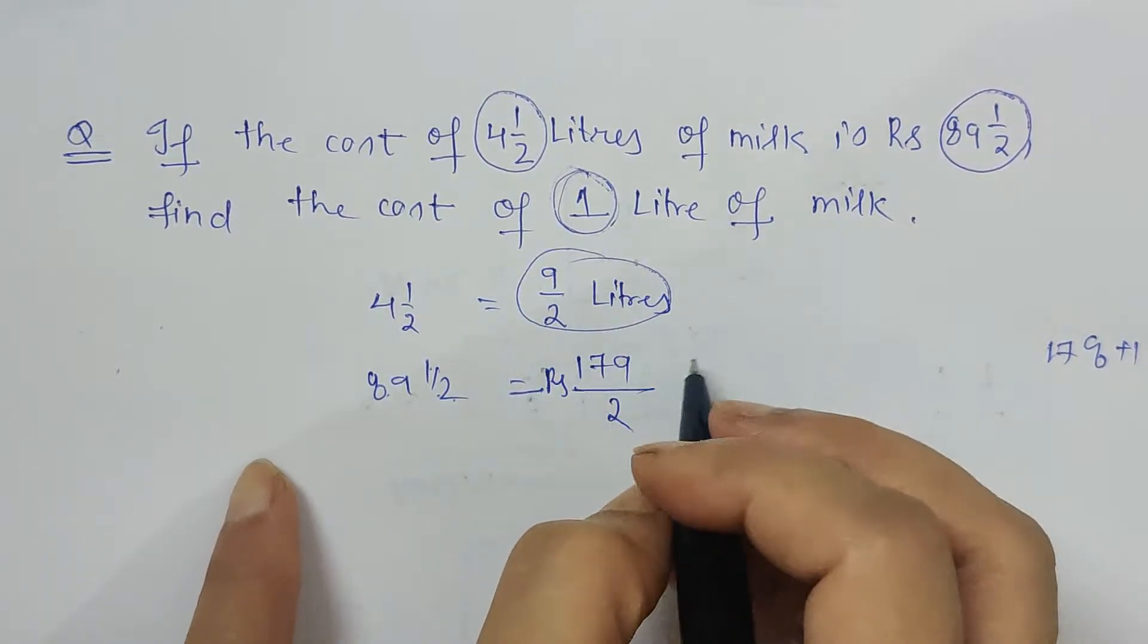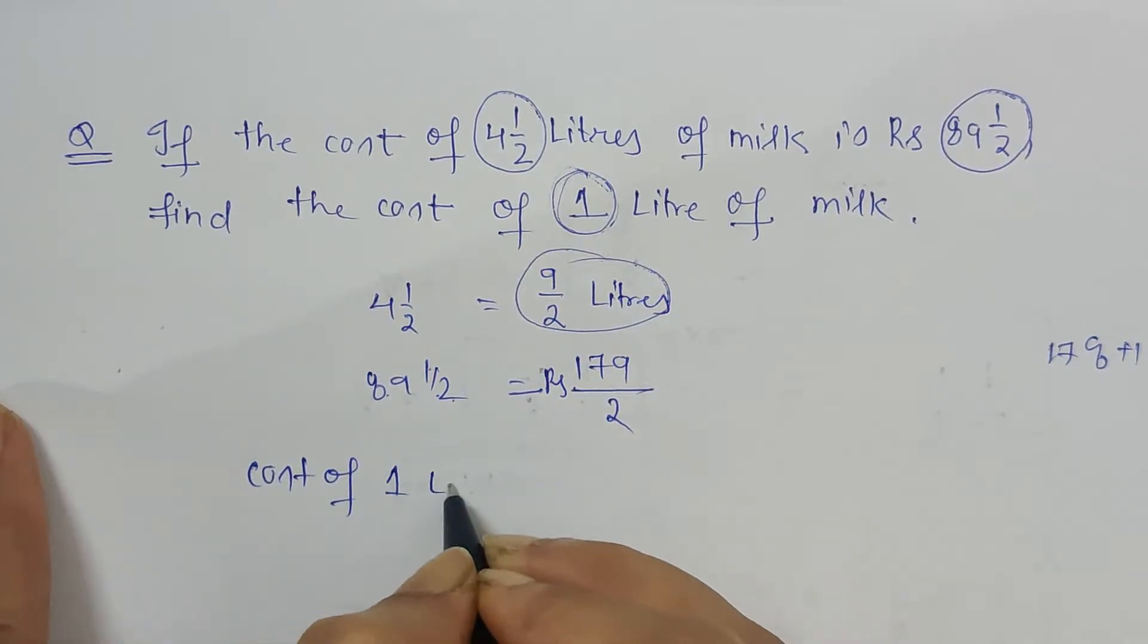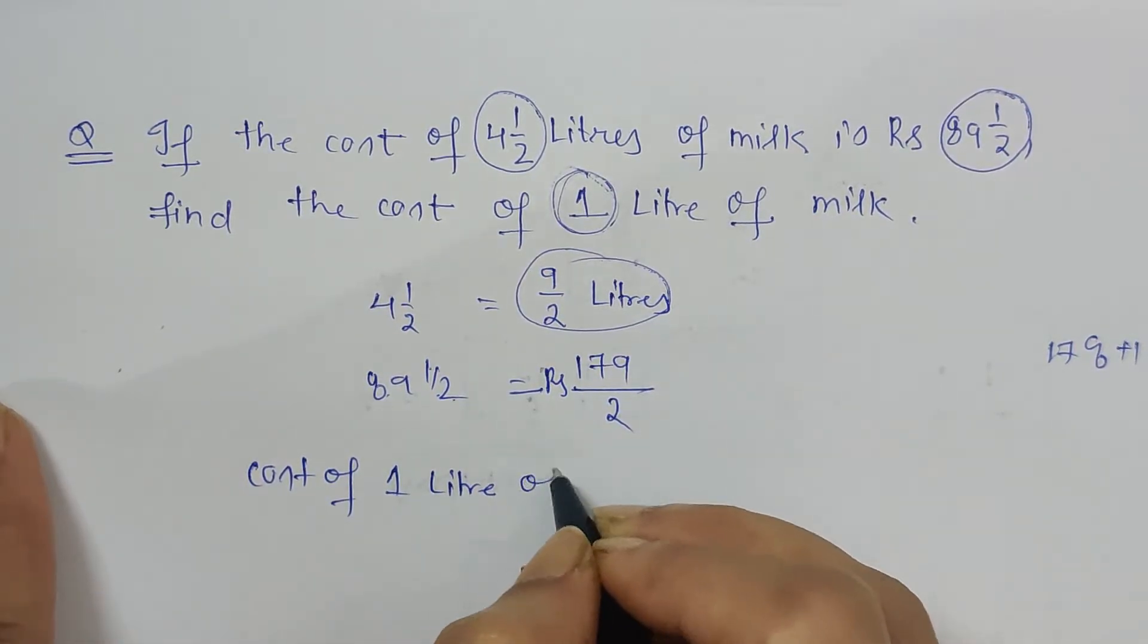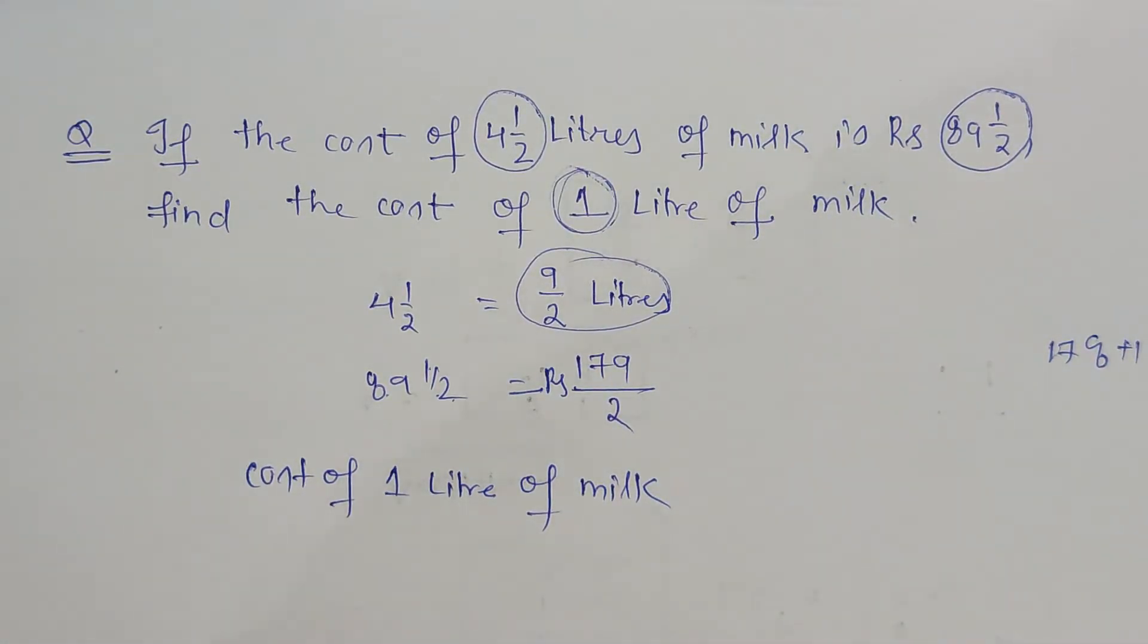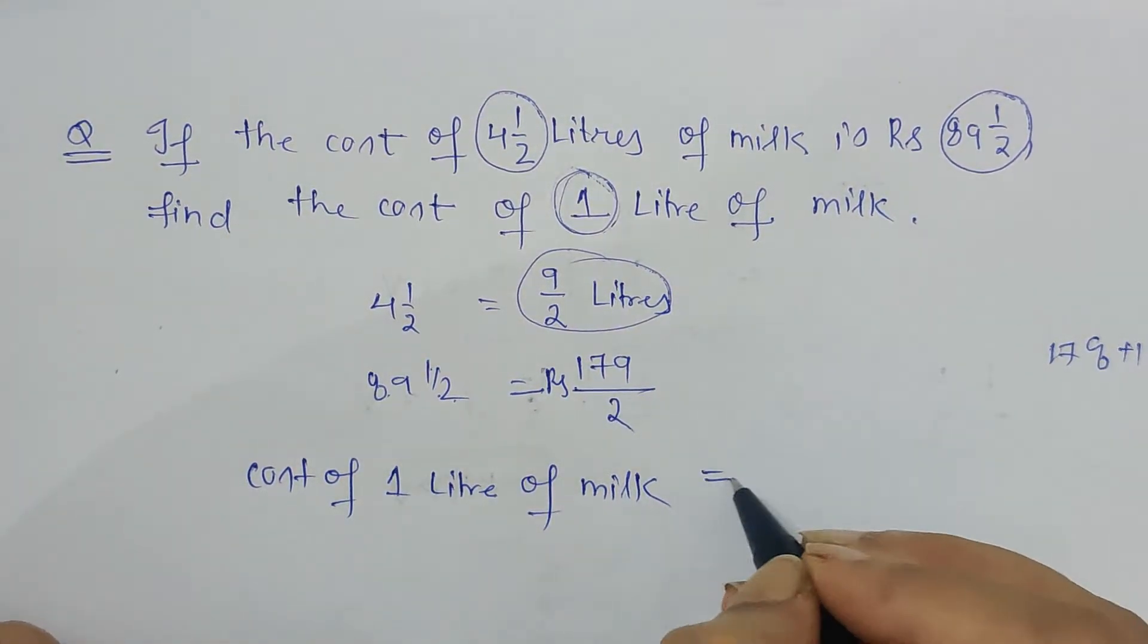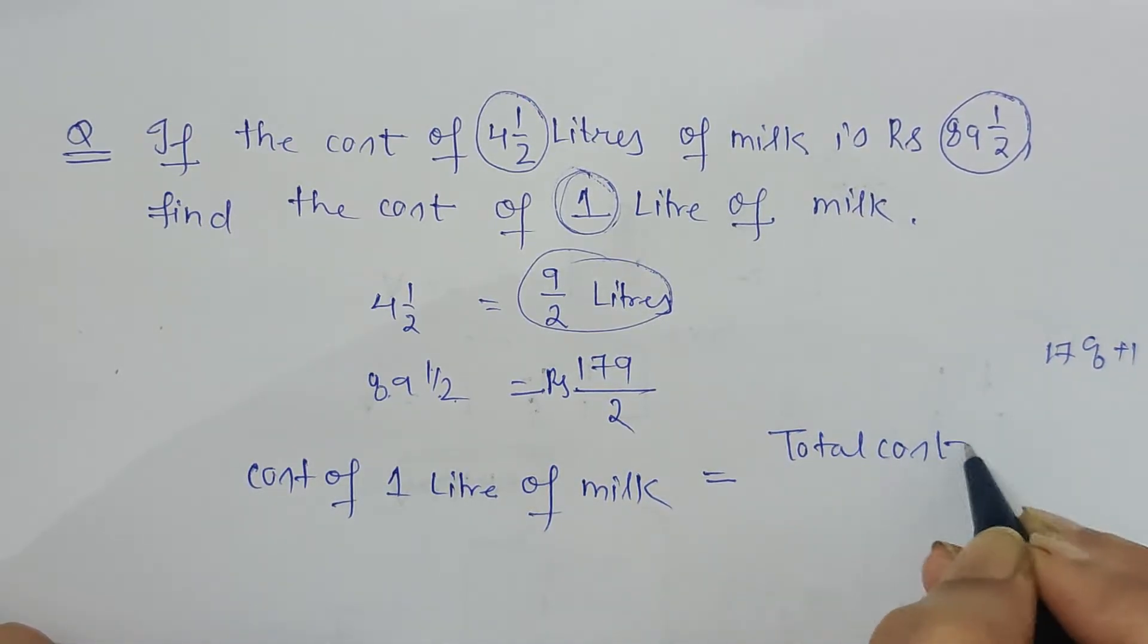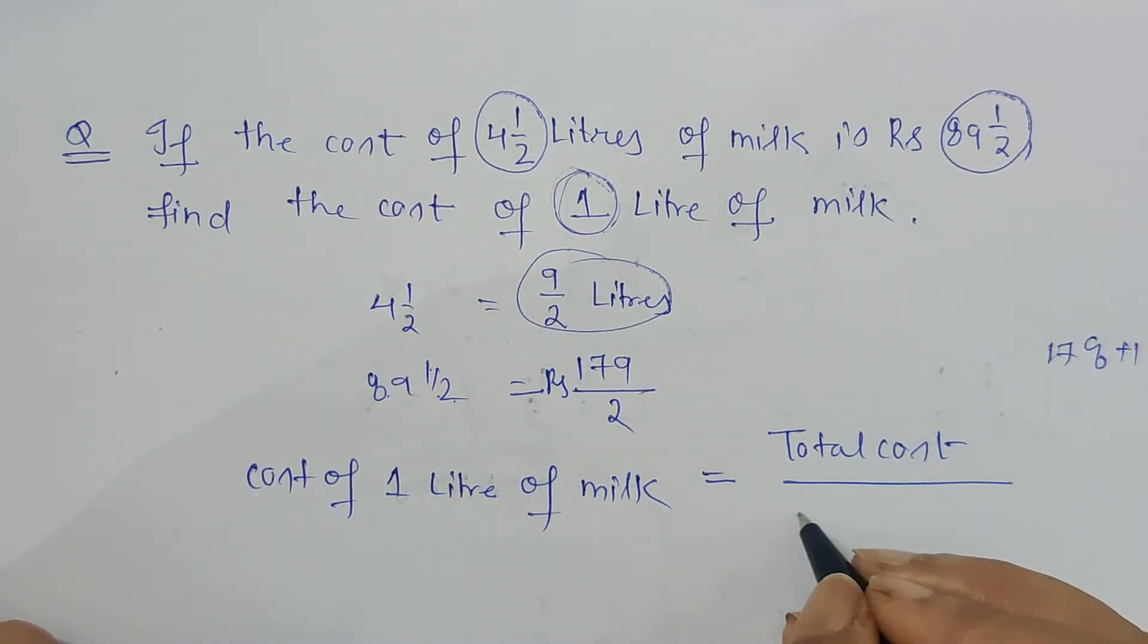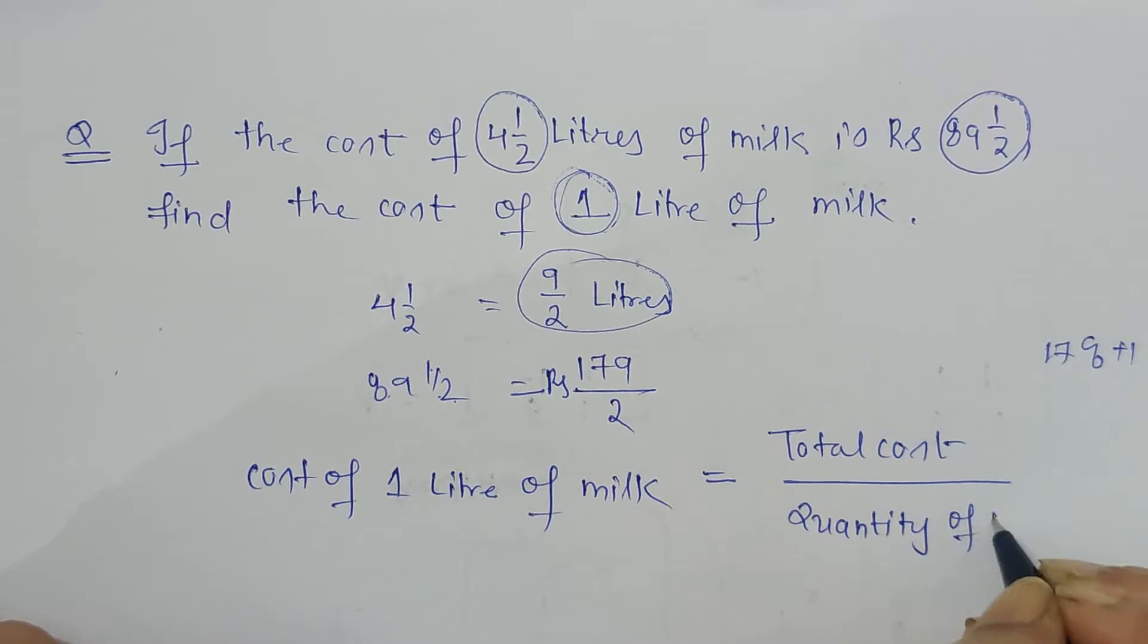Now, cost of 1 liter of milk is equal to total cost upon quantity of milk corresponding to the cost given, or the total cost.